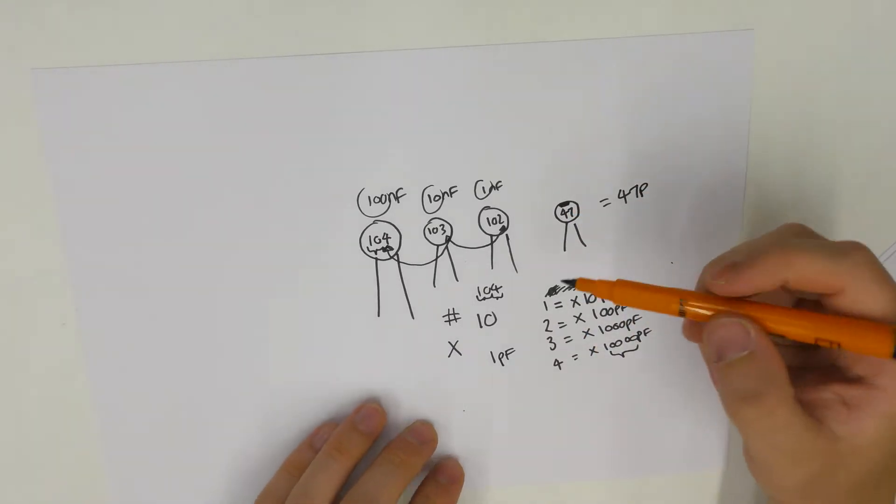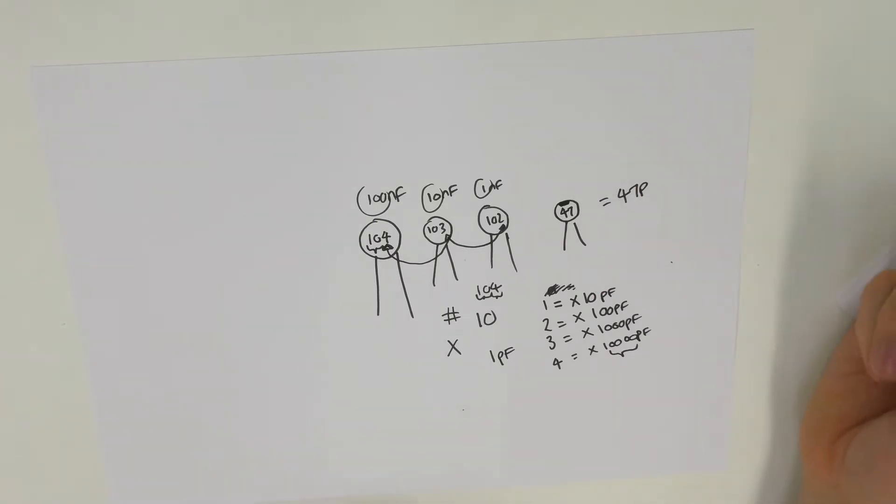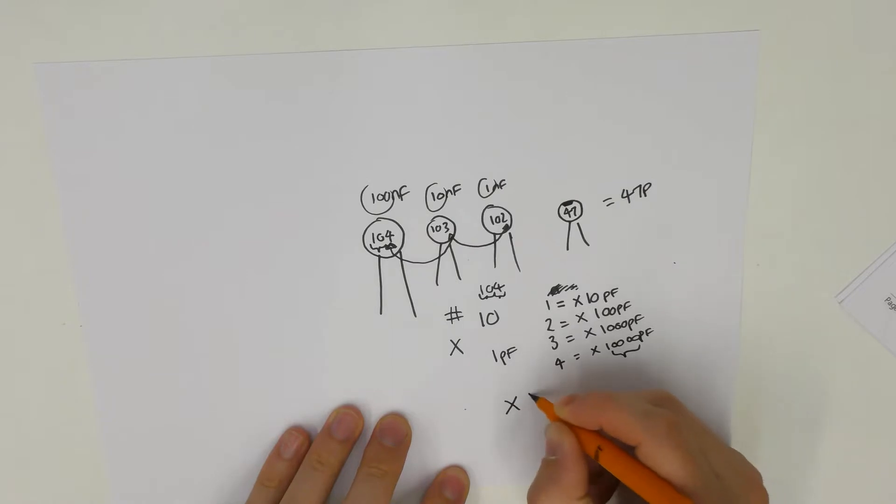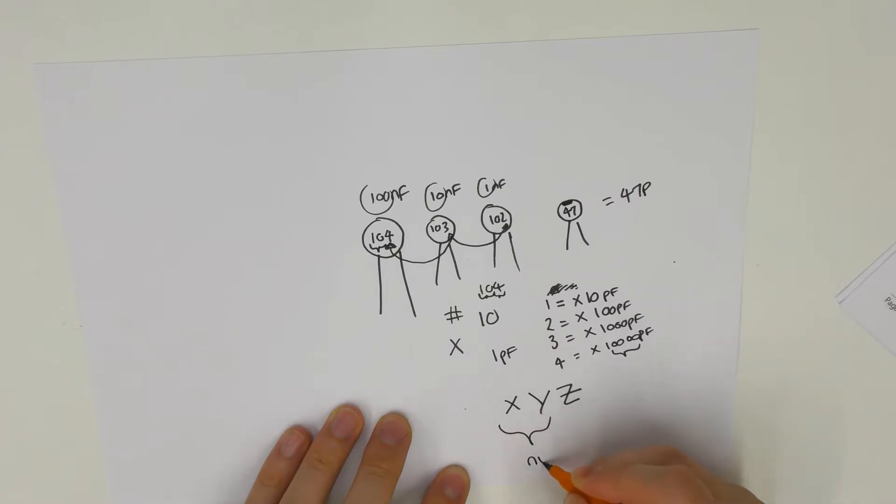But sometimes the picofarad range of capacitors will also have a little black ceramic disc. And that can be quite useful to identify the values that are quite small. So, all in all, we have three values, X, Y, and Z, if it's bigger than 100 picofarads. The X, Y is the numeric value.